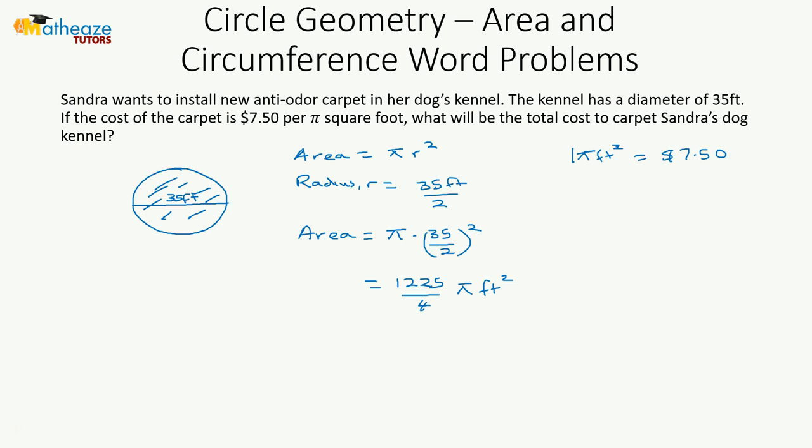Then 1,225 over 4 pi square foot is going to be $7.50 per pi square foot multiplied by 1,225 pi over 4 square foot.